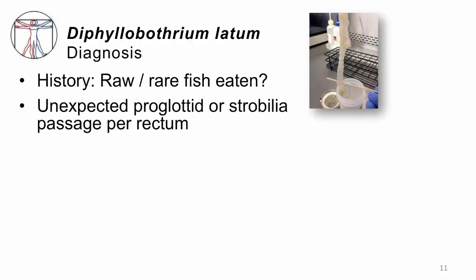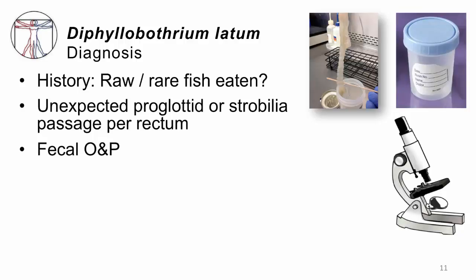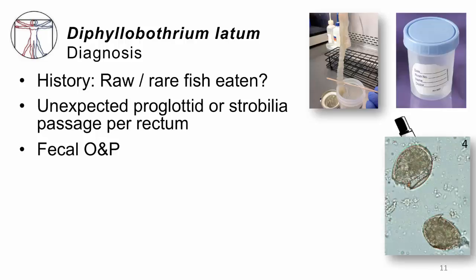To make the diagnosis: first, have they consumed raw or rare fish recently? Did they pass a worm? That makes it easy. If they haven't, you should still do a fecal ova and parasite exam — check the stool, submit a specimen, look at it under the microscope.